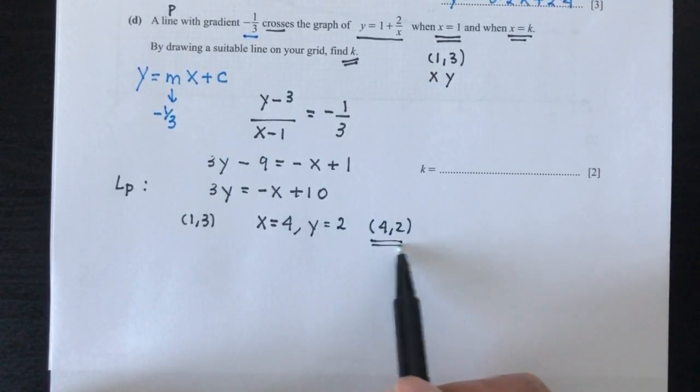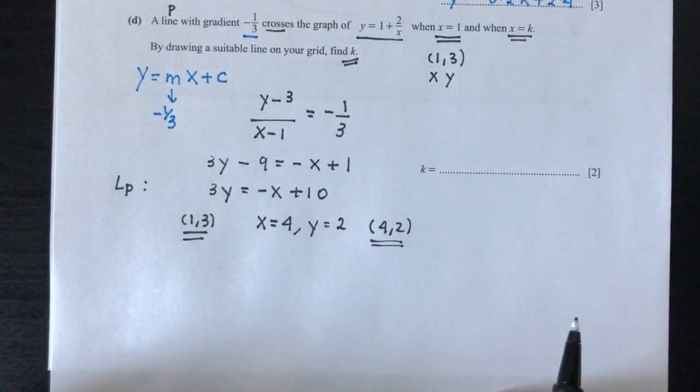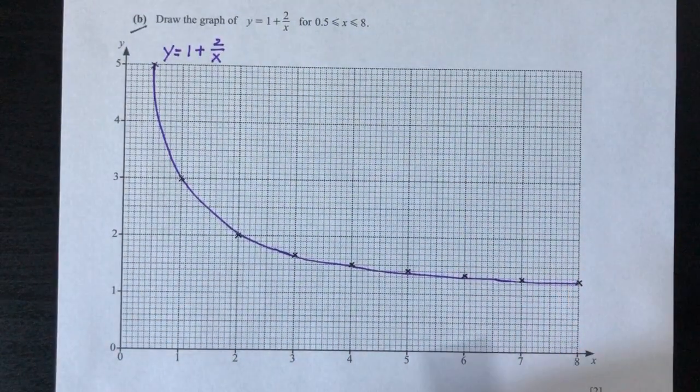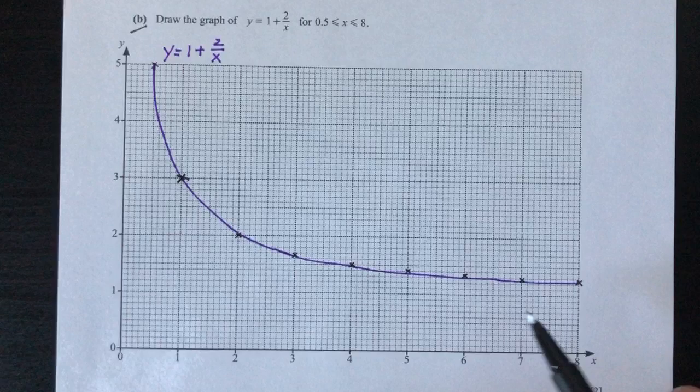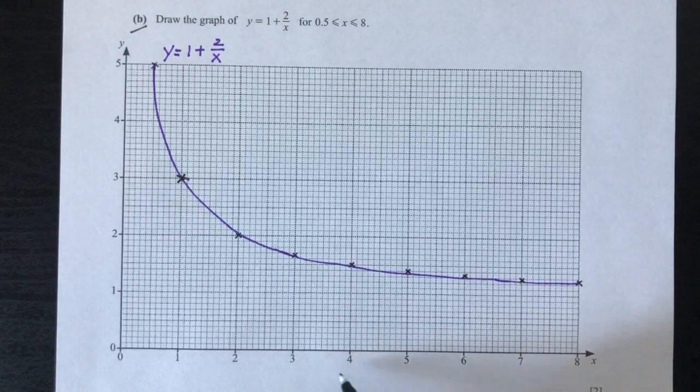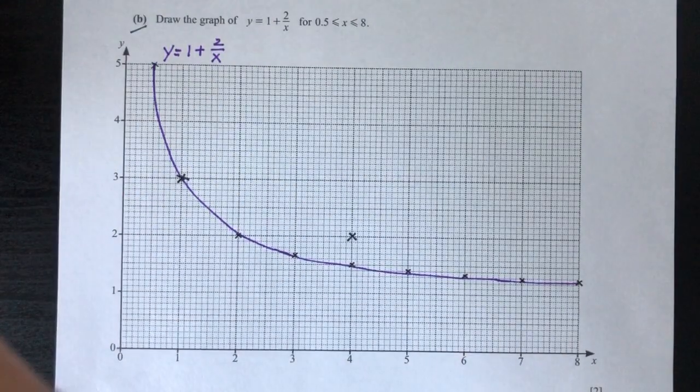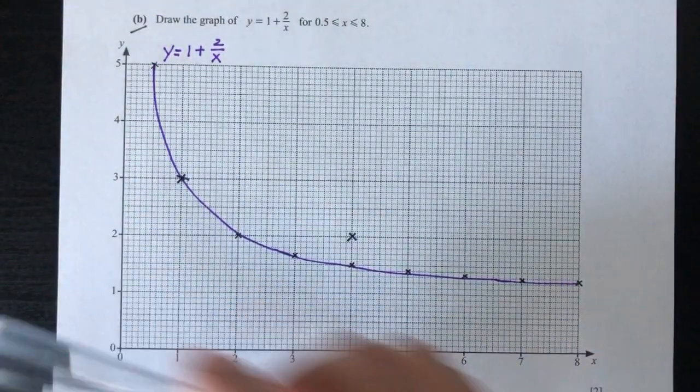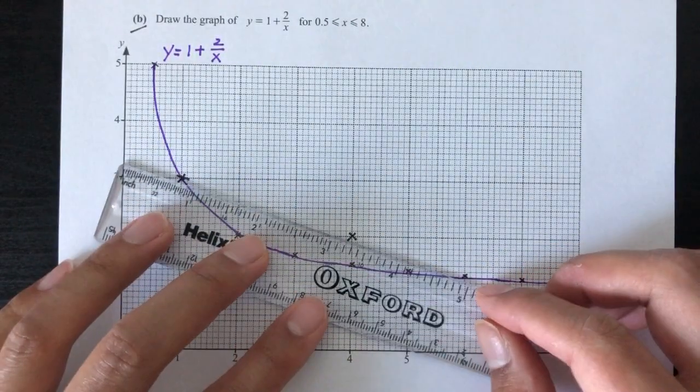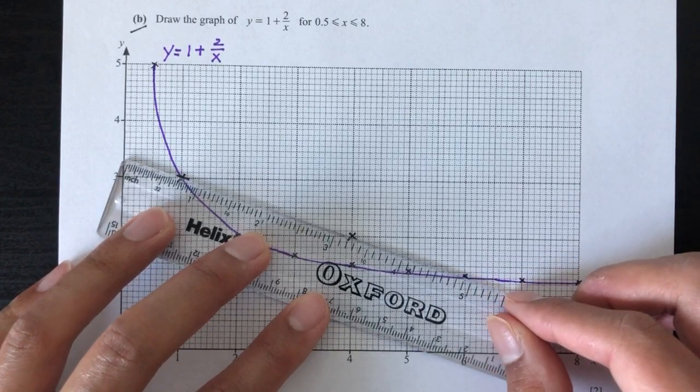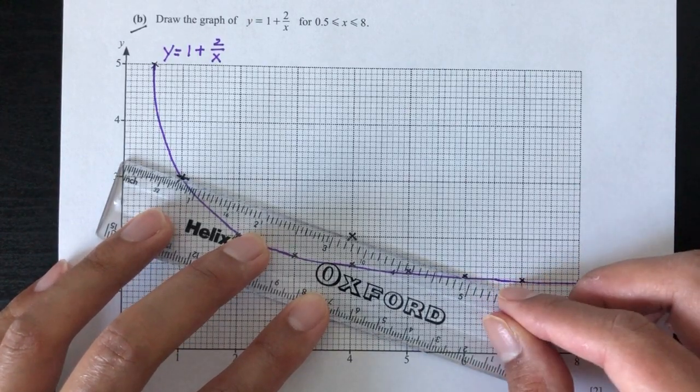So the first point was (1, 3), right here. And then we have (4, 2). 4, 2 will be right here. So now given that we have the two points, we can join them to draw your line P. So by drawing your line P, you will find your answer for your value of k.